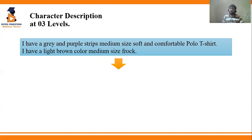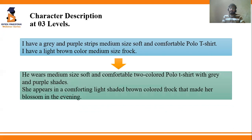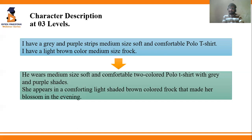Once learners share their simple description, guide them to use second-person pronouns — this is the complex character description for intermediate learners. For example: 'He wears a medium size, soft and comfortable two-colored polo t-shirt with gray and purple shades.' The pronoun and structure change, but the vocabulary remains similar. Another example: 'She appears in a comforting light-shaded brown colored frock that blossoms in the evening.' You can compare these descriptions with images as well.